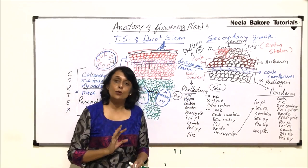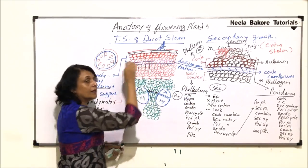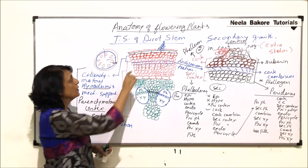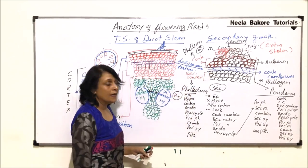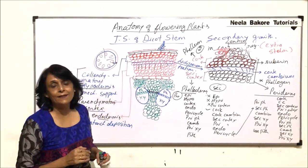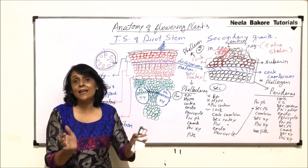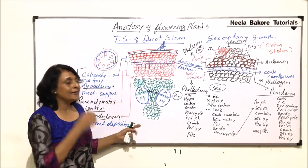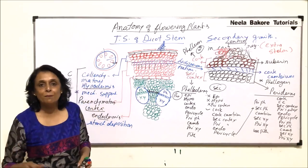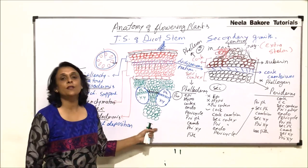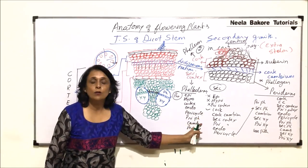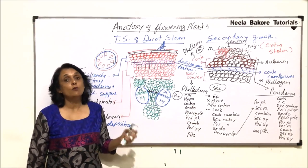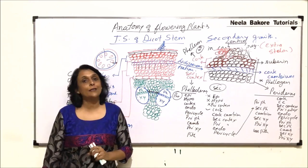Two places where secondary growth has taken place: one in the vascular region and one in the cortical region. After secondary growth, there are four additional layers formed in a ring manner: cork, secondary cortex, secondary phloem, and secondary xylem. When tissue is added in a ring, the girth of the plant increases. Secondary growth takes place in the dicot stem in a very perfect manner. We will discuss a few more things in the next part — what exactly is bark, what is wood, and different types of woods.